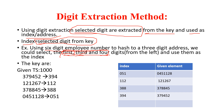Suppose employee Ram has employee ID 379452. Since the first digit is 3, the third digit is 9, and the fourth digit is 4, the index is 394. So 379452 is stored at index 394. Next, employee ID 121267: what will be the index?